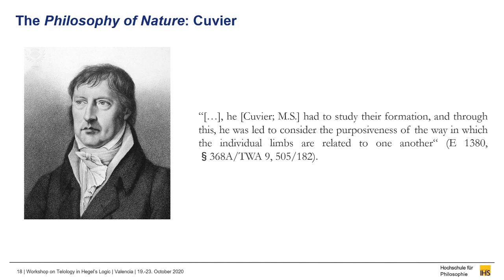Hegel explicitly associates these kinds of functional descriptions with the notion of purposiveness. He states that Cuvier 'had to study their formation, and through this he was led to consider the purposiveness of the way in which the individual limbs are related to one another.' While it is not clear from this passage alone whether Hegel uses purposiveness in the sense of inner or external purposiveness, I maintain that it is external purposiveness. Hegel relates this purposiveness to the two ways of production of an animal, which has great similarity with the two ways of realizing a purpose in the Science of Logic—which is part of a treatise on external purposiveness. Furthermore, the talk of universal requisites and particular conditions resembles the general functionality and its relation to an external objectivity found in the Science of Logic.